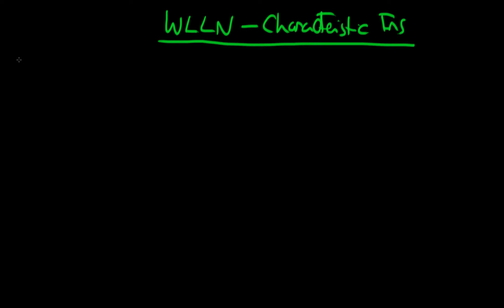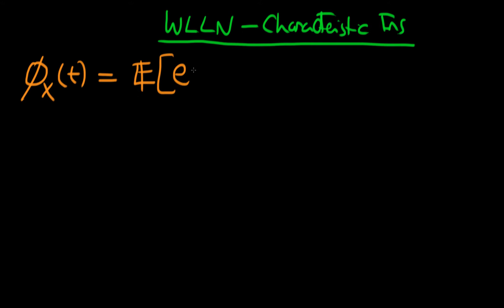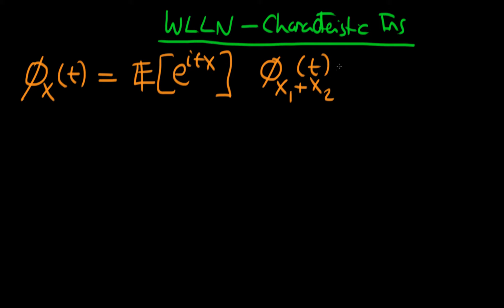Remembering what we found in the last video: we defined the characteristic function of some random variable x as a function of some parameter t, as the expectation of e to the itx, where i is the square root of minus 1. Then we went on to prove another property: the characteristic function of x1 plus x2, if x1 and x2 are independent, is equal to the product of the individual characteristic functions.